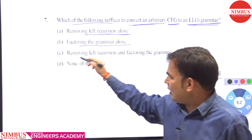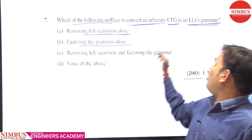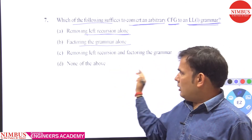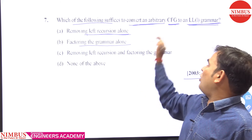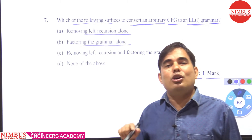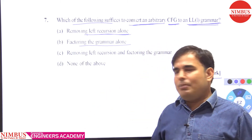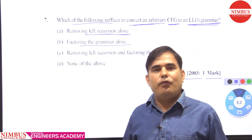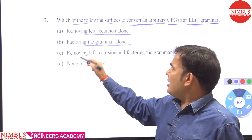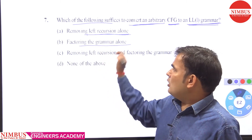Even after removing left recursion and left factoring — which are the two known problems of LL(1) grammars — we cannot guarantee that the grammar belongs to LL(1), because it may still be an ambiguous grammar. When the grammar is ambiguous, it does not belong to any type of deterministic grammar. So options A, B, and C are all false.